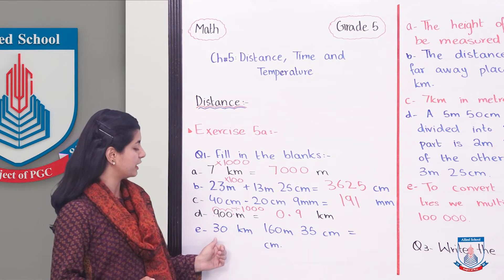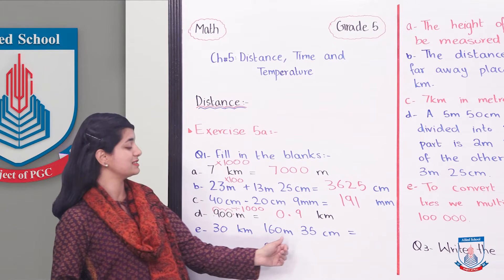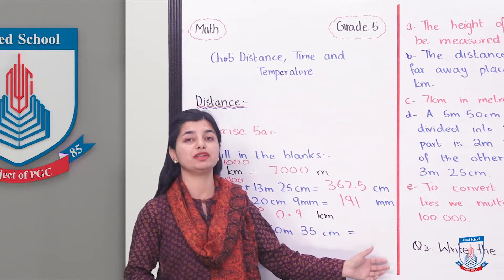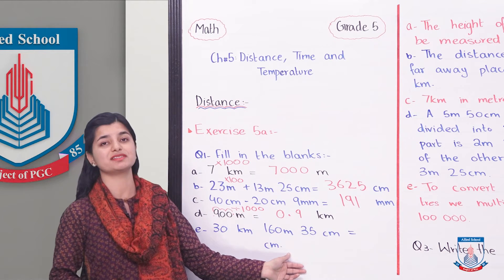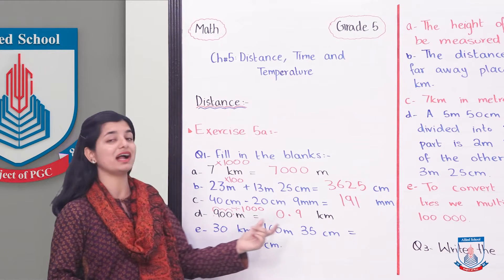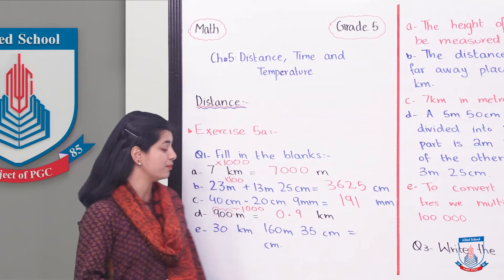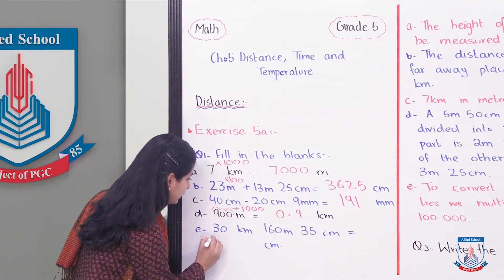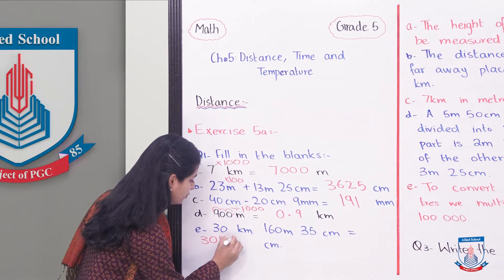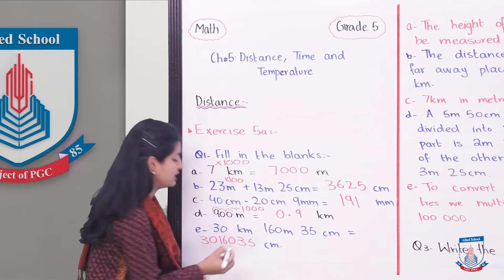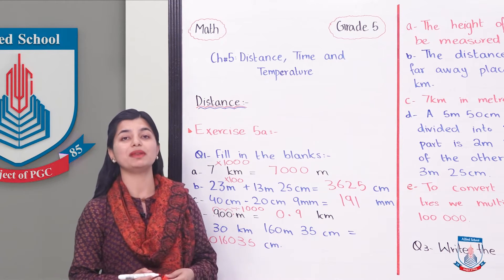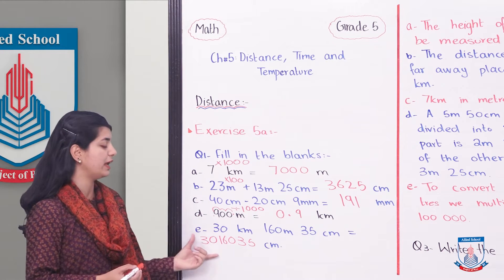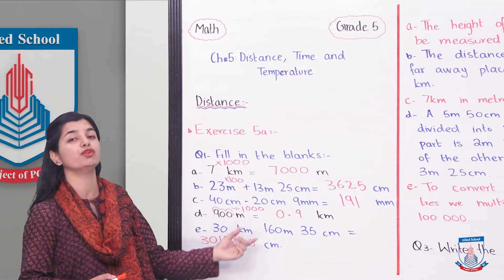Part E: 30 kilometers, 160 meters and 35 centimeters, express it in centimeters. You will add all the values. You will write it as 30 km converted, plus 160 m converted, plus 35 centimeters. When you convert them all to centimeters and add them together, you get the answer.